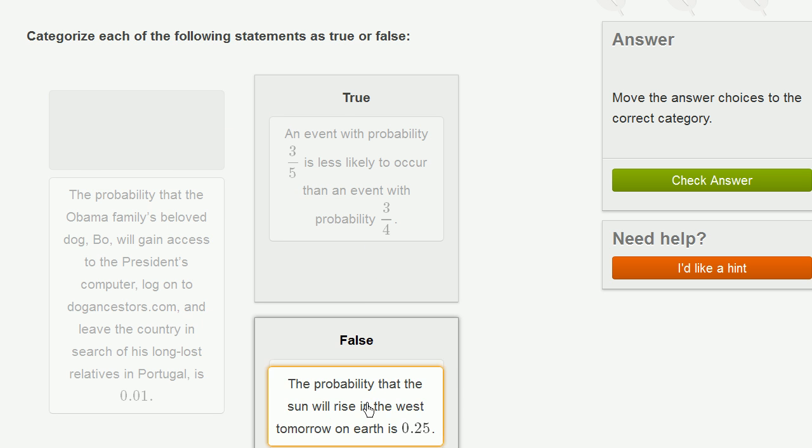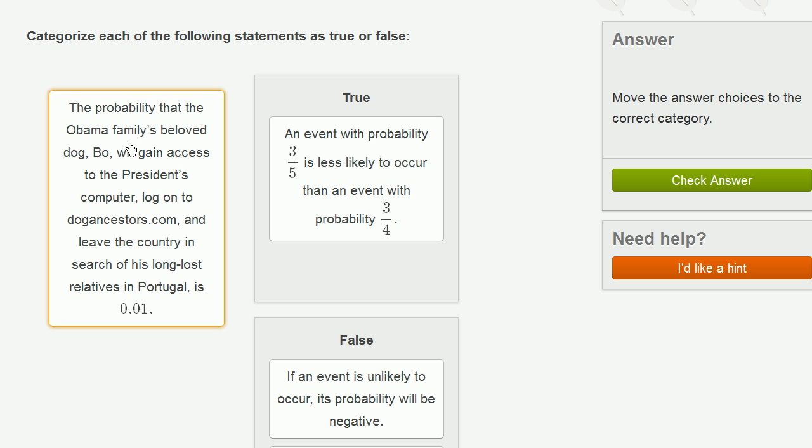The probability that the Obama family's beloved dog, Bo, will gain access to the president's computer, log on to DogAncestors.com, and leave the country in search of his long-lost relatives in Portugal is 0.01. This seems like, if not an impossibility, a near impossibility. That the dog somehow will know how to log on to a computer, this is probably an impossibility.